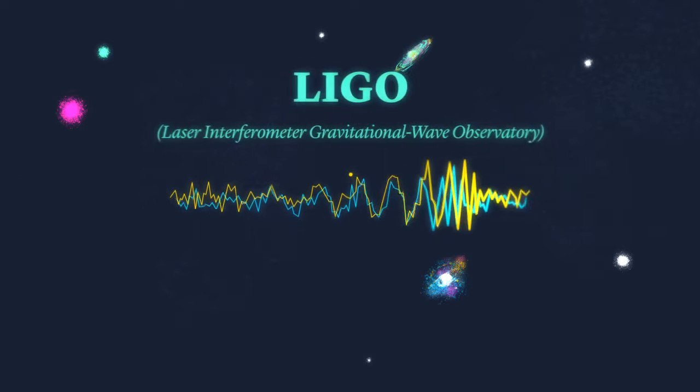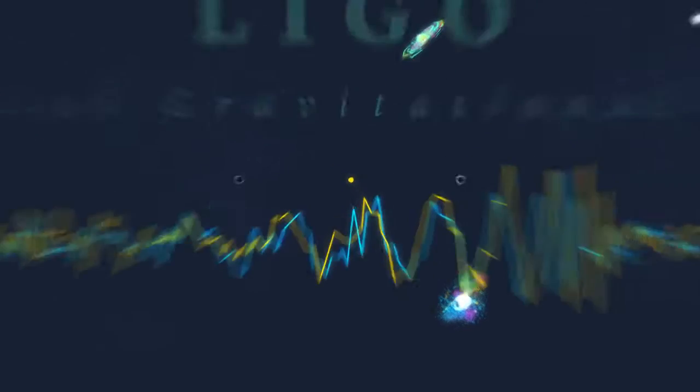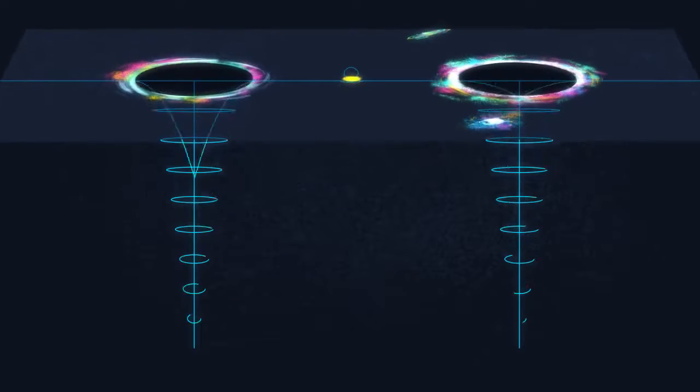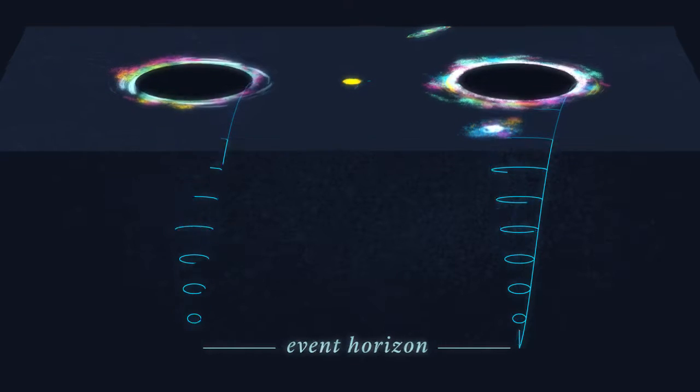So this is the event that was recorded first by LIGO, the collision of two black holes. Each one was about 30 times the mass of the sun. They were 1.3 billion light-years away when they collided.